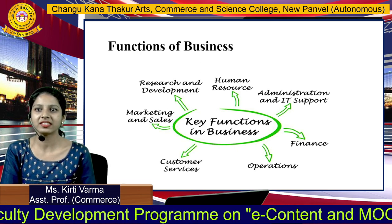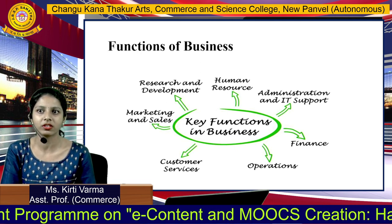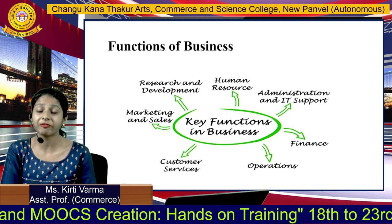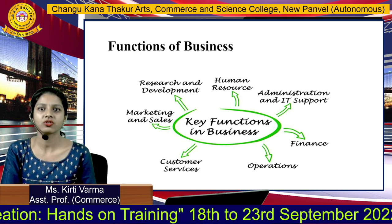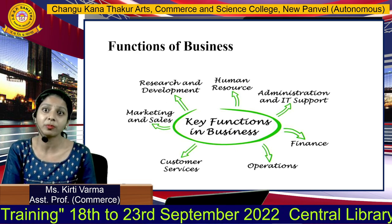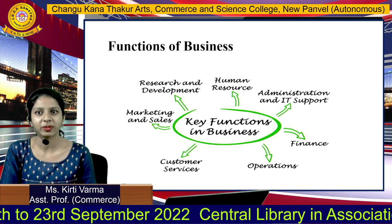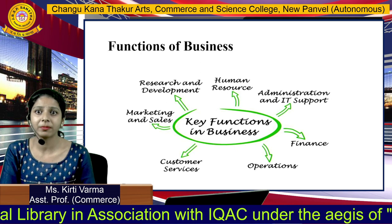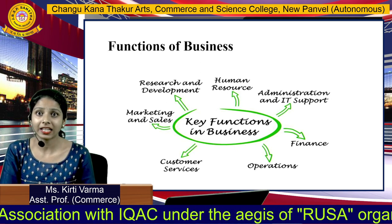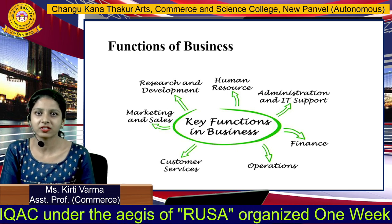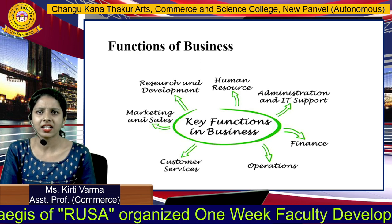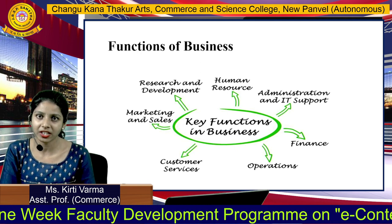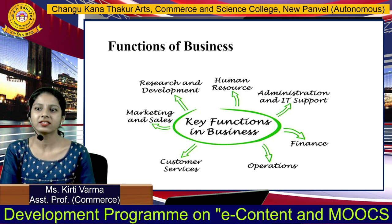Next is operation. Business is operated at various levels — local, national, and international level. Next is customer service. The main aim of business is to provide effective, efficient, and quality customer service — to satisfy customers, retain customers, and maintain customer loyalty. Next is marketing and sales. Business involves marketing functions such as promotion mix and product mix, undertaken for the benefit of customers. Various selling activities are conducted to promote products. Through marketing and sales function, we can implement product positioning practices and brand building practices.